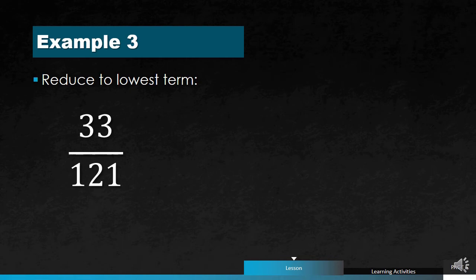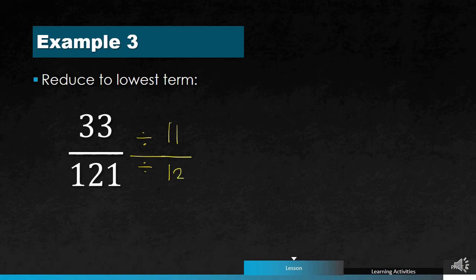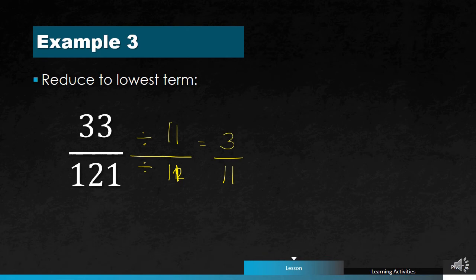Let's try another example: 33 over 121. The common factor between 33 and 121 is 11. So we divide both by 11: 33 divided by 11 is 3, and 121 divided by 11 is 11. Since the common factor of 3 and 11 is 1 and they are both prime numbers, we can say that 3 over 11 is the lowest term or simplest form of 33 over 121.